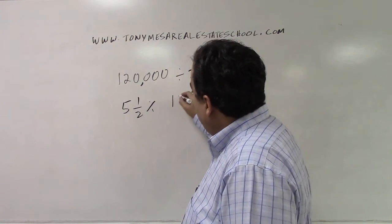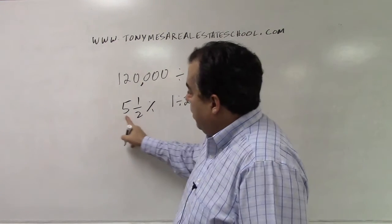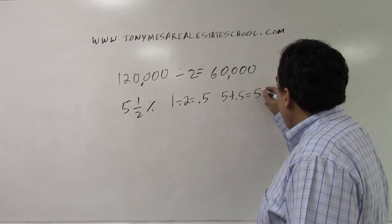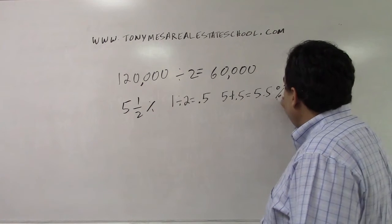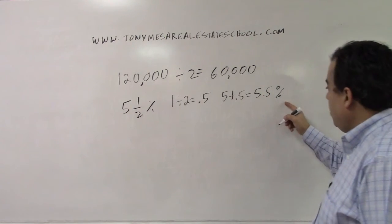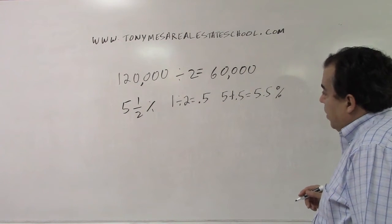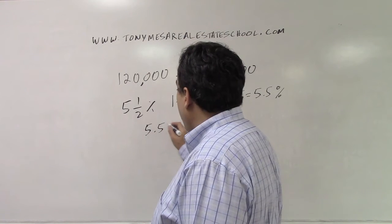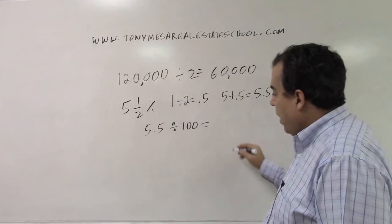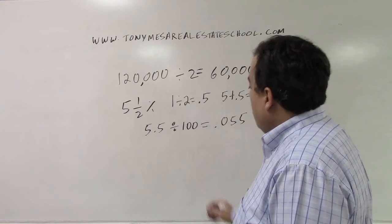Now, five and one-half percent — to change that to a decimal number: the top number 1 divided by the bottom number 2 gives me 0.5. So 5 plus 0.5 gives me 5.5. Five and a half percent and 5.5% are the same number. Then I take that 5.5 and to change a percentage number to a decimal number I divide by 100, and I get 0.055.